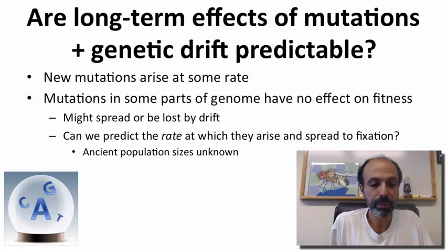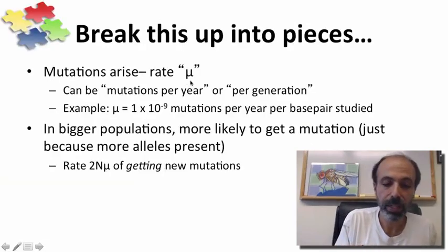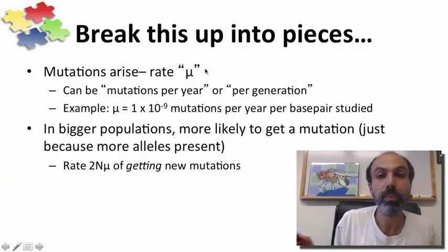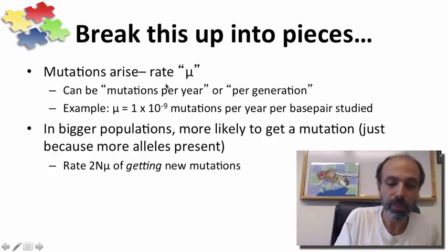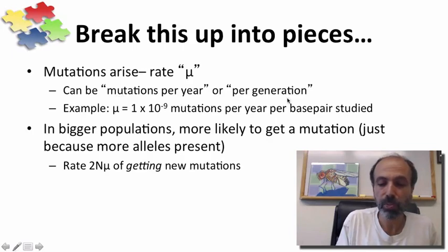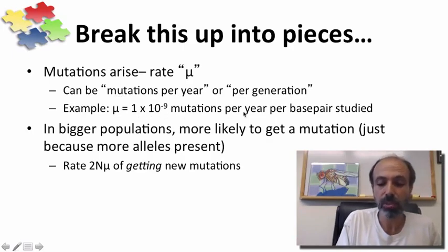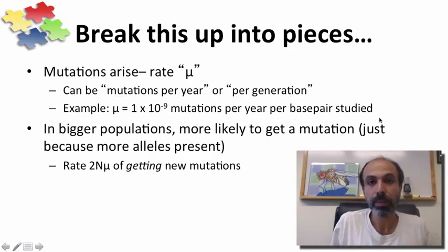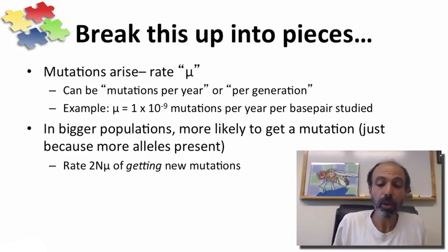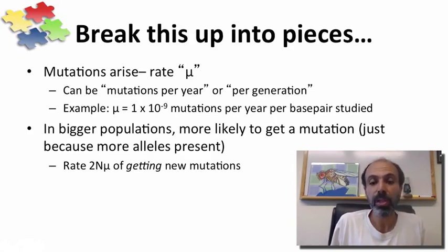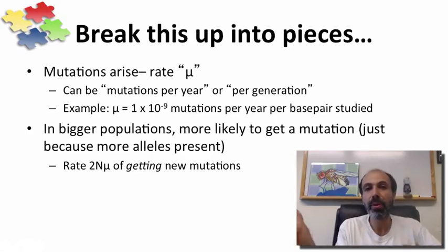Mutations are arising, and let's say they arise at a rate which we'll refer to as mu — the Greek letter mu. This mu can be measured as mutations per year or as mutations per generation. We'll focus primarily on the per year side in this video. Let's imagine that a mutation rate is 1 times 10 to the minus 9 mutations per year per base pair. That's not a crazy estimate — that's about what you'd expect to see. Now, in larger populations, you're more likely to get the mutation simply because there are more alleles present, and every chromosome has some probability of getting the mutation.